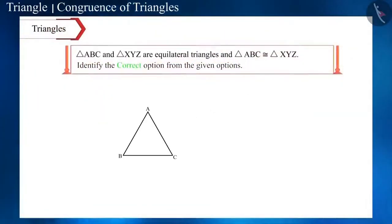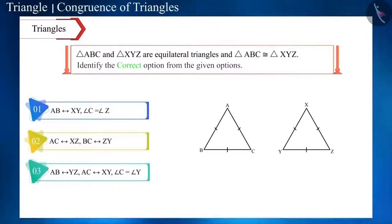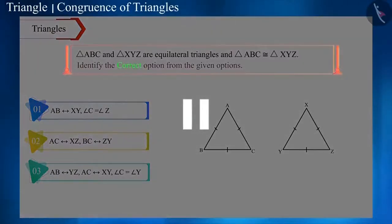Triangle ABC and triangle XYZ are equilateral triangles and are also congruent to each other. Now, can you tell which of the given options is correct? You can also pause the video to think about the answer to this question.